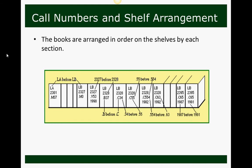Books are arranged on the shelves in order by each section. You can see the chart here showing how it breaks down: LA comes before LB, then 2327 comes before 2328, .B comes before .C, .34 before .55, .55 before .554, .555 before .63, and 1987 comes before 1991. That's how they follow along on the shelves.